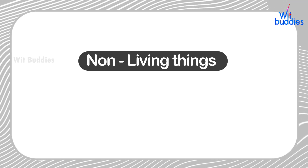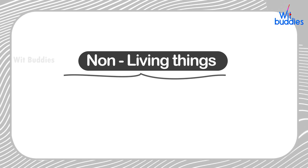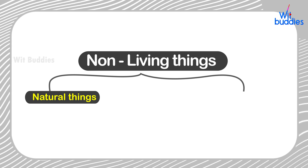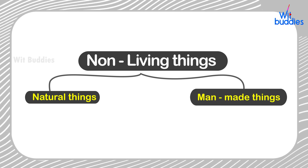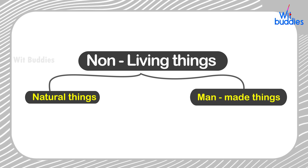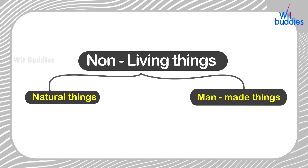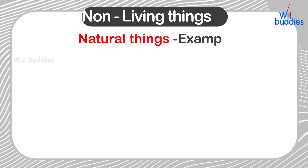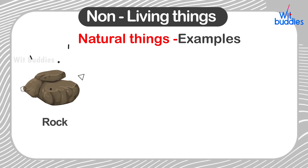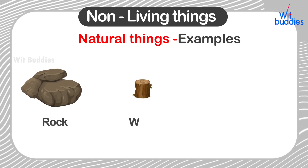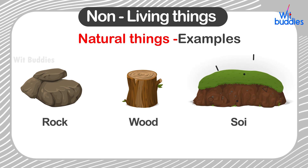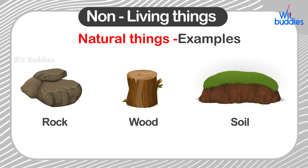Non-living things have two types: 1. Natural things and 2. Man-made things. Natural things — examples: Rock, Wood, etc.